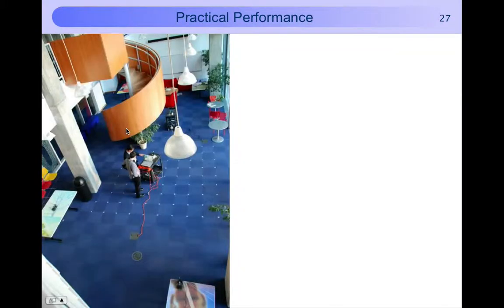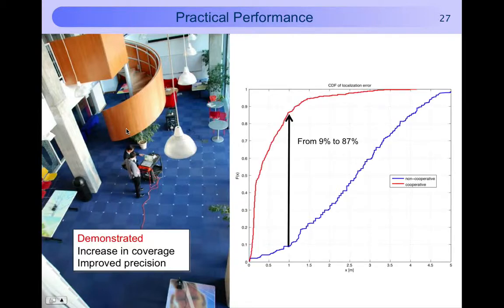First of all we can show that cooperation increases coverage so that means the region where you could be localized. Secondly we show that cooperation yields increased accuracy. In our scenario based on the 71 data points we found that without cooperation 90% of the measurements had an error exceeding one meter. With cooperation only 10% had an error exceeding one meter.